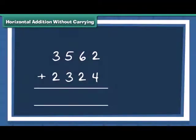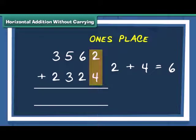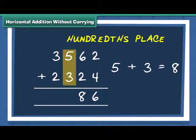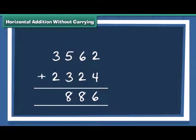We have the 2 numbers, 3562 and 2324, which are written as shown. Now we first add numbers at 1's place. Next we move to numbers at 10's place. Then add numbers at 100's place and finally the numbers at 1000's place are added. Thus, sum of 3562 and 2324 is 5886.